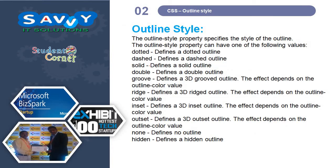The outline styles are similar to border styles. The outline style property specifies the style of the outline and can have one of the following values: dotted, dashed, solid, double, groove, ridge, inset, outset, none, and hidden. The effect of some values depends on the outline color value.